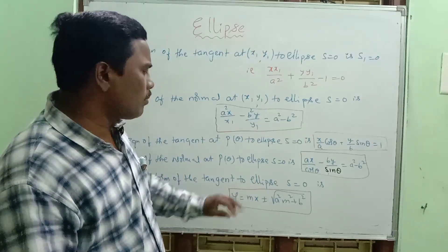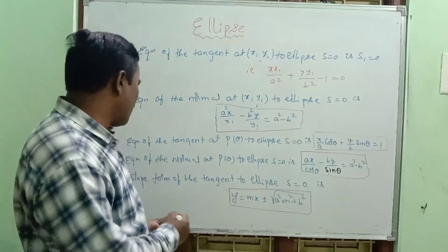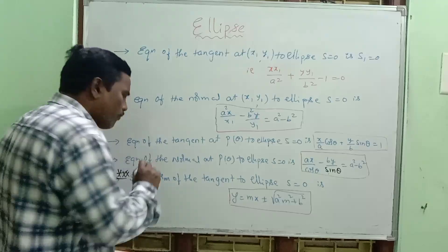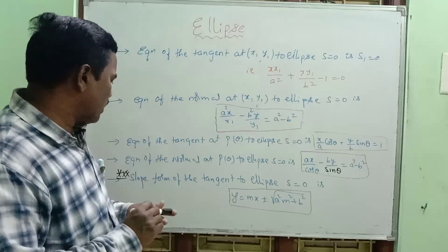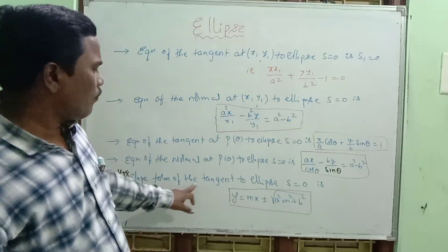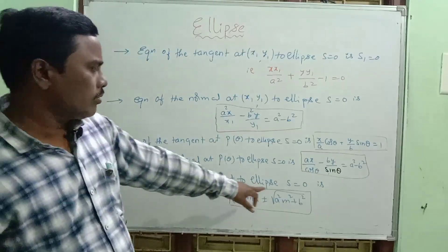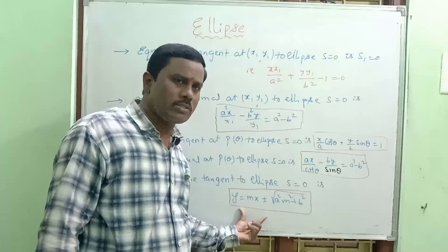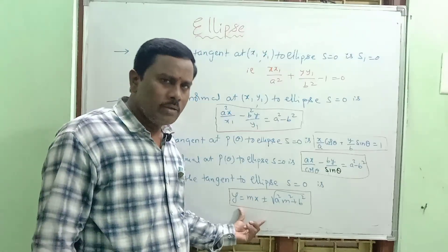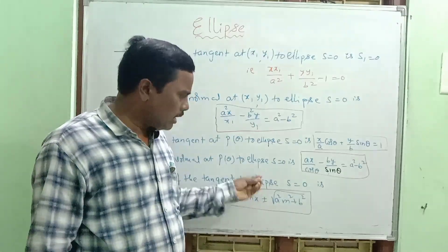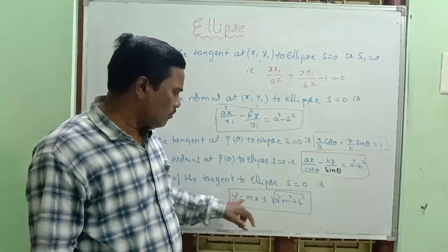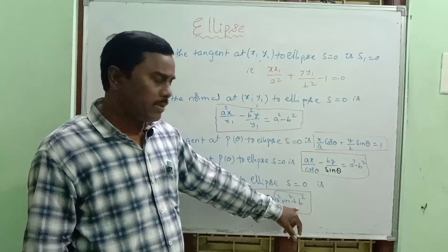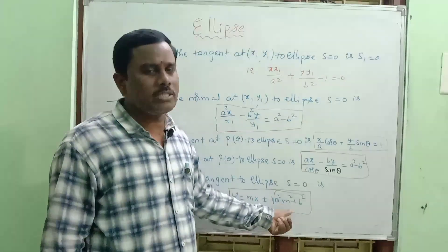Now the slope form of the normal — very, very important. This formula covers about 5 questions. The slope form of the tangent to the ellipse S equal to 0 is: y equal to mx plus or minus root of (a square m square plus b square).